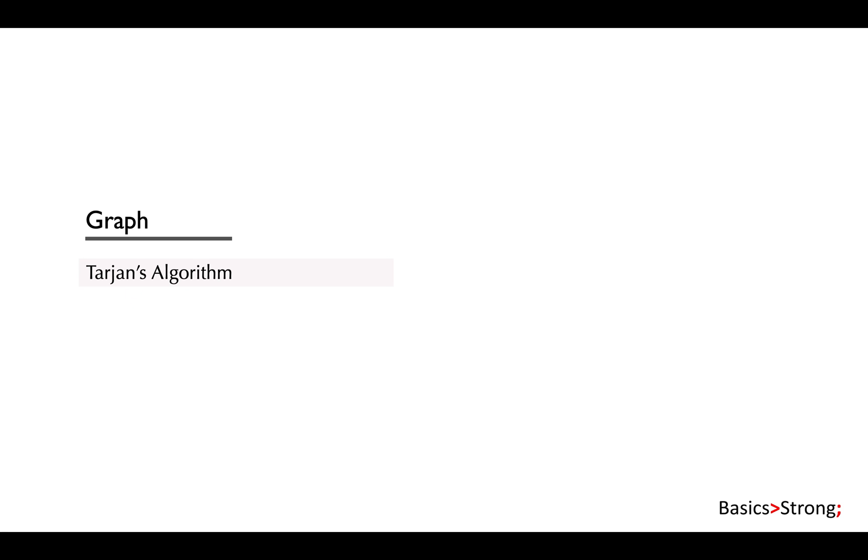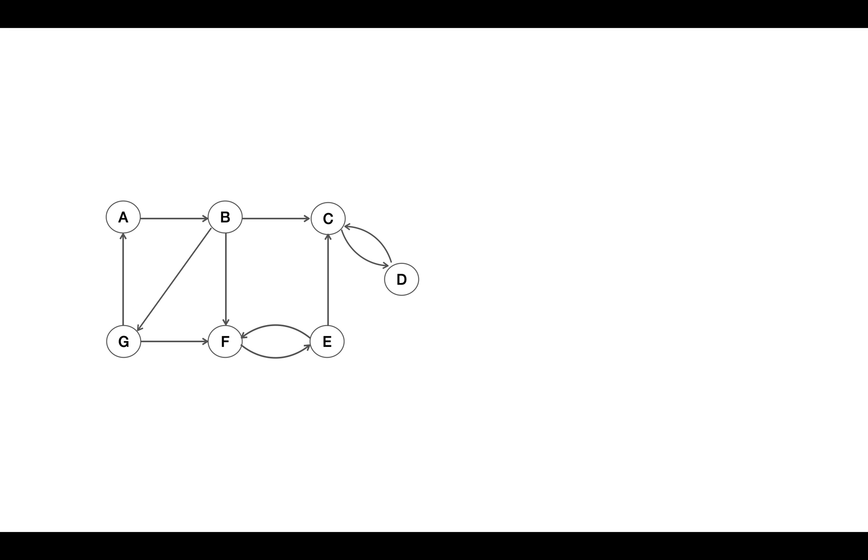Tarjan's algorithm involves DFS traversal over the nodes and it identifies and records strongly connected components as they are encountered. To identify SCC components, this algorithm includes few steps. Let's understand each one by one.